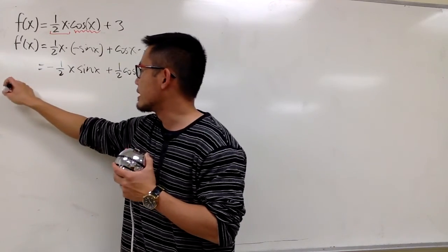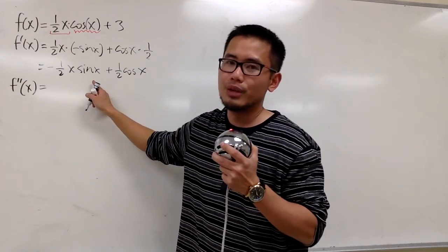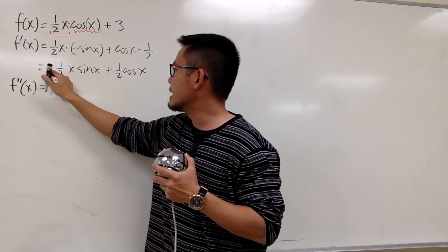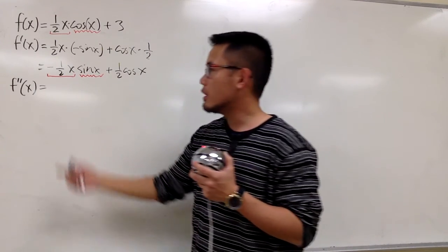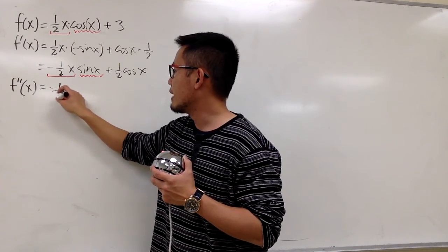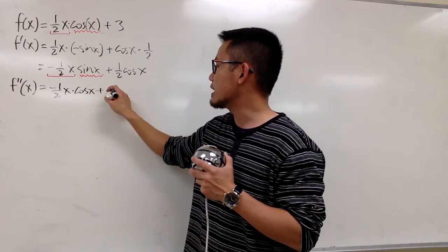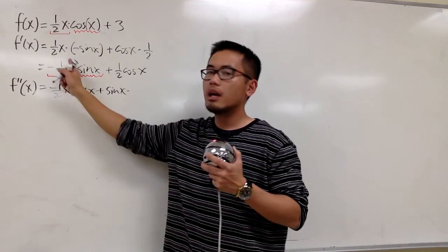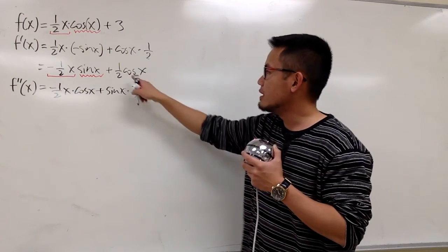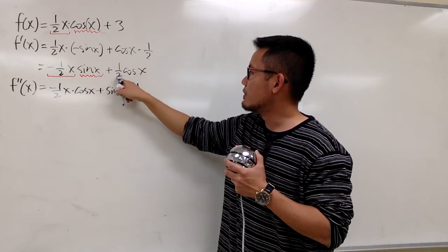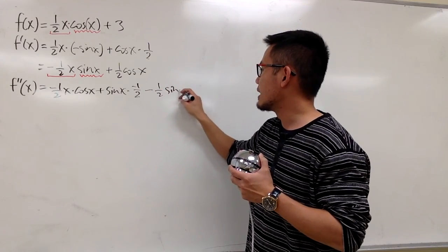Now we'll look at this and do the second derivative, so let's put down f double prime of x. We have to once again use the product rule. We pair negative ½x as the first function and sine x as the second. Keep the first function, negative ½x, times the derivative of the second, which is cosine x, and then add the second function, sine x, multiplied by the derivative of the first, which is negative ½.